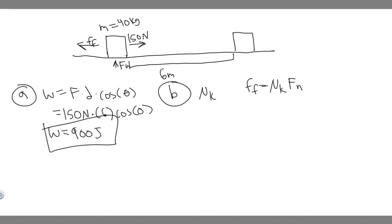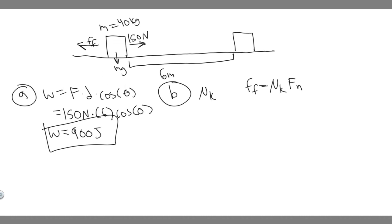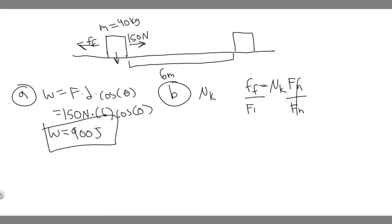The normal force is just the force pushing up from the ground. We know the normal force is just going to be exerting mg. According to Newton's third law of motion — for every action there's an equal and opposite reaction — there's some force going upwards, F sub n. So we know the normal force is just going to be equal to mg. So mu sub k is just going to be the force of friction divided by F sub n, which is just mg.